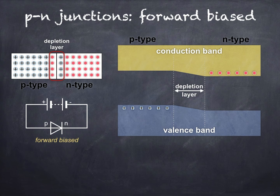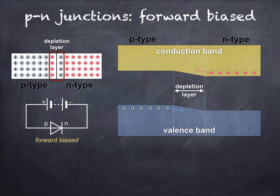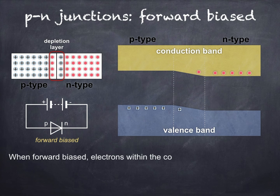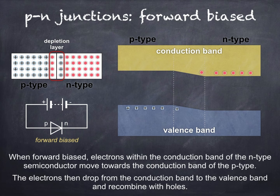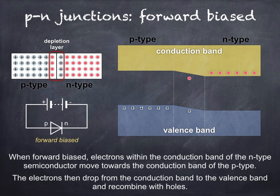So, when forward biased, electrons within the conduction band of the N-type semiconductor move towards the conduction band of the P-type. Holes within the valence band of the P-type also move towards the valence band of the N-type. Within the junction, electrons drop from the conduction band to the valence band and recombine with holes. Energy is released during these recombinations, and in a P-N junction diode this is in the form of heat, resulting in a rise in temperature.